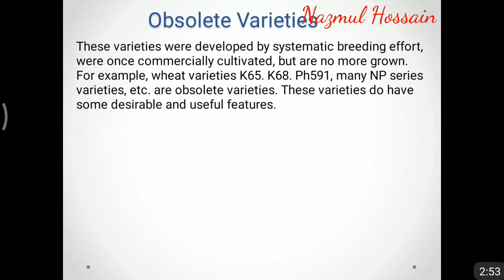Obsolete varieties are those that were developed by systematic breeding effort or once commercially cultivated but are no more grown. For example, wheat varieties K65, K68, and PH591, and many NP series varieties are obsolete varieties. These varieties do have some desirable and useful features.